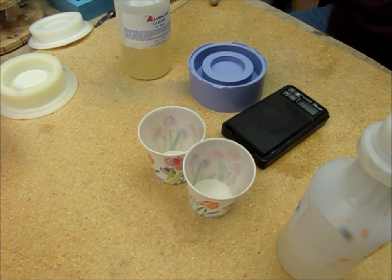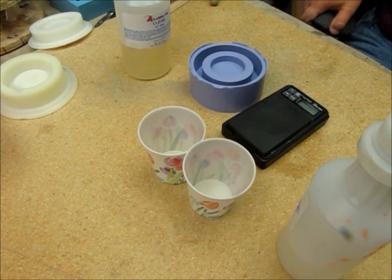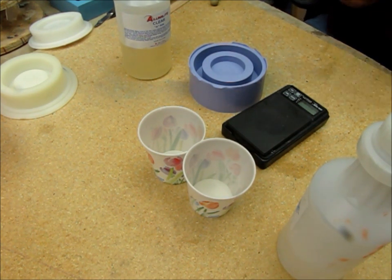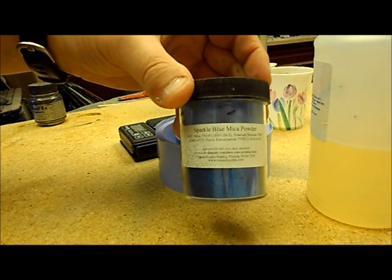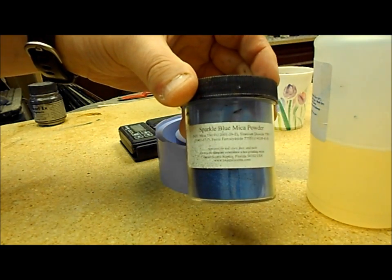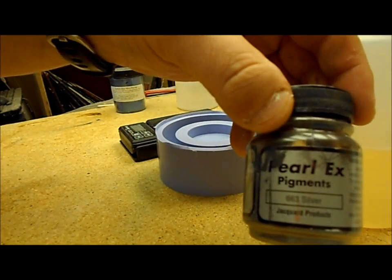Now I'm going to use Alumalite to create a bracelet out of the new mold that I just created. I'm going to use some mica powder and some Pearl X silver.